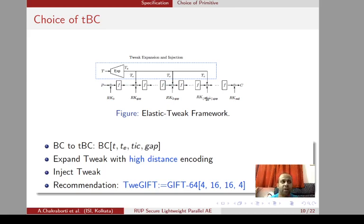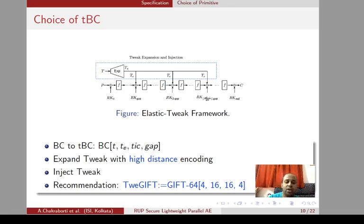This is the framework for designing our tweakable block cipher, called the elastic tweak framework. What this framework does is convert a standalone block cipher to a short-tweak tweakable block cipher. It takes some well-known block cipher and uses a small tweak of T bits, expands this tweak with a high-distance encoding to make an expanded tweak T_E where small t is the size of the expanded tweak, and then injects the expanded tweak to the block cipher state after every gap number of rounds.